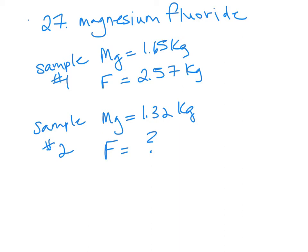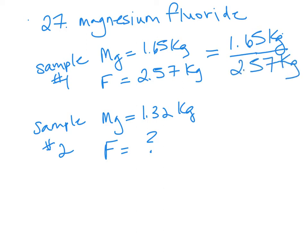What you have to look at is putting magnesium and the fluorine into a ratio, which means we're just going to make it into a fraction, and then we are going to try and find the equivalent fraction for sample number two. So we're going to have 1.65 kilograms of magnesium on top and 2.57 kilograms of fluorine on the bottom. It doesn't matter which one goes on top and which one goes on the bottom.